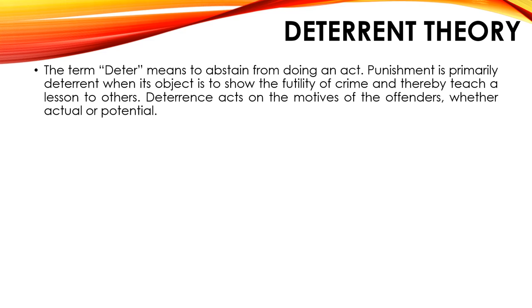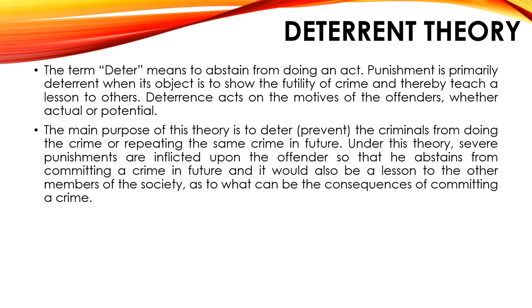The first theory is deterrent theory. The term deterrent means to abstain from doing an act. Punishment is primarily deterrent when its object is to show the futility of crime and thereby teaches a lesson to others. Deterrence acts on the motives of the offenders, whether actual or potential. The main purpose of this theory is to deter or prevent the criminals from doing the crime or repeating the same crime in future. Under this theory, severe punishments are inflicted upon the offender so that he abstains from committing a crime in future, and it would also be a lesson to other members of the society as to what can be the consequence of committing a crime.